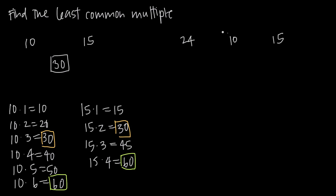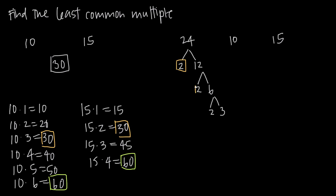Well, the easiest way to do it is to factor all three numbers into their prime factors — we're going to do some prime factorization here. With prime factorization, if we have an even number, we know we can divide 2 into it. So we'll get 2 and 12, because 2 times 12 is 24. Remember, a prime number is a number that's divisible only by 1 and itself. So 2 is a prime number, but 12 is not, because I can also divide it by 3, 4, and 6.